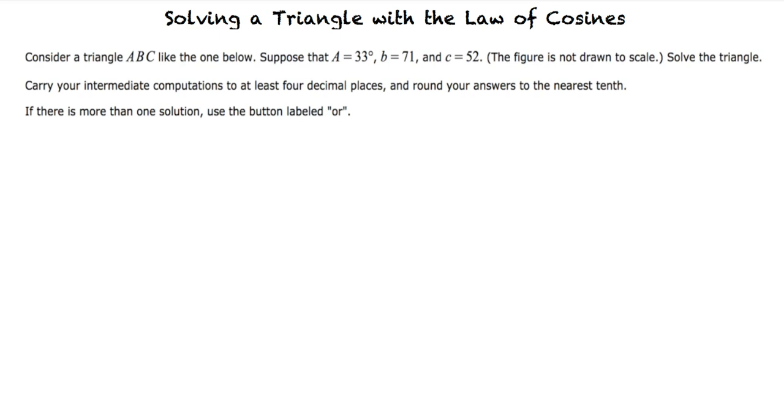Consider a triangle ABC like the one shown below. Suppose that A equals 33 degrees, B equals 71, and C equals 52. Solve the triangle.